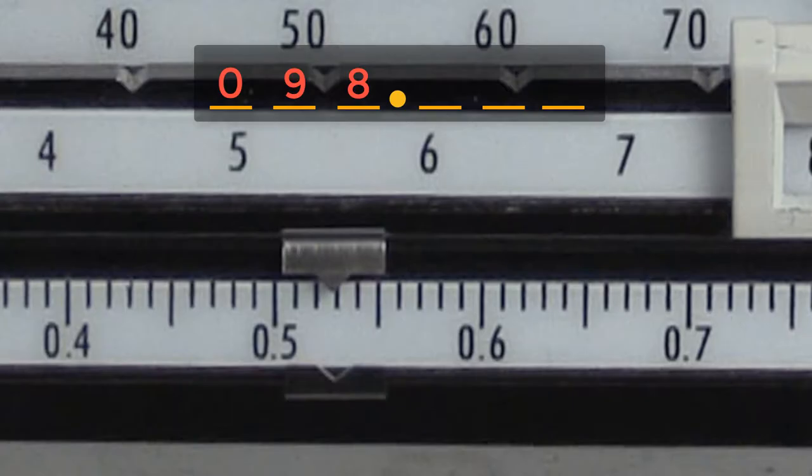Zooming in, we can see that on the tens beam, the slider is reading somewhere between 0.5 and 0.6. So we can add the five to the tenths place in our measurement.